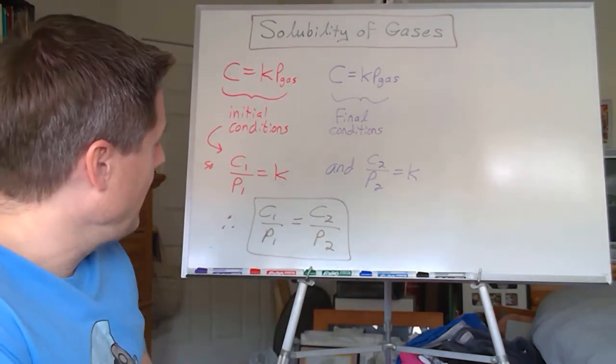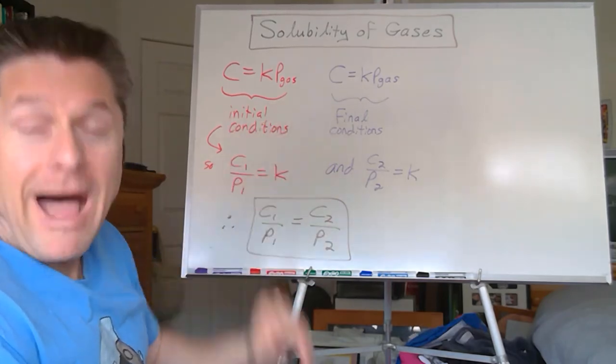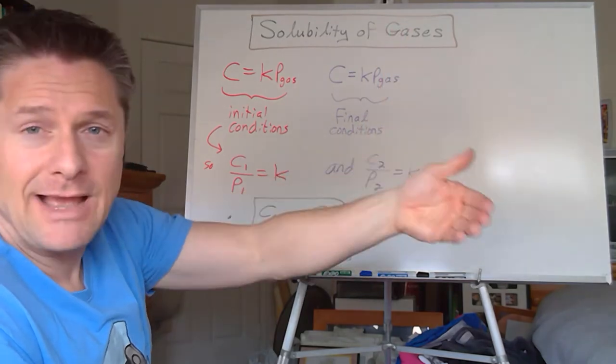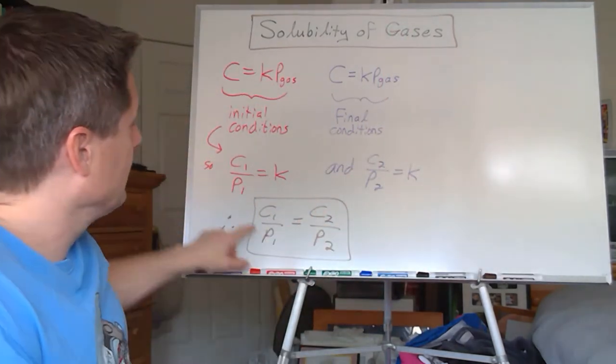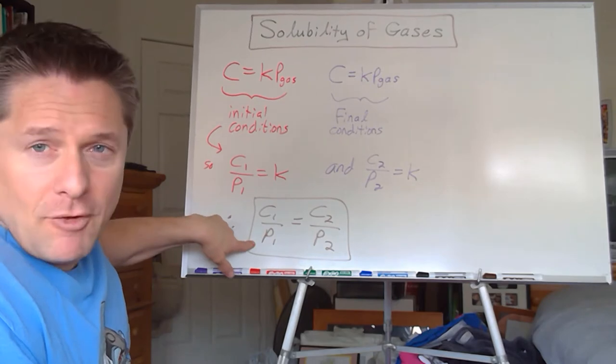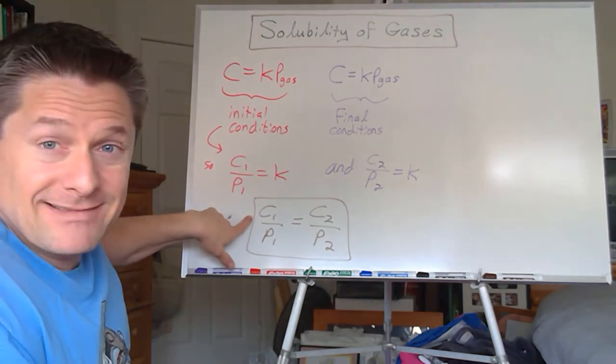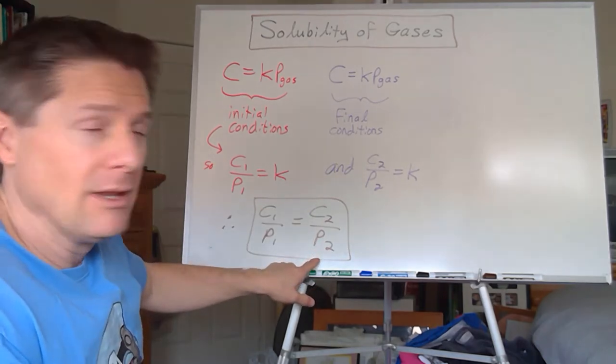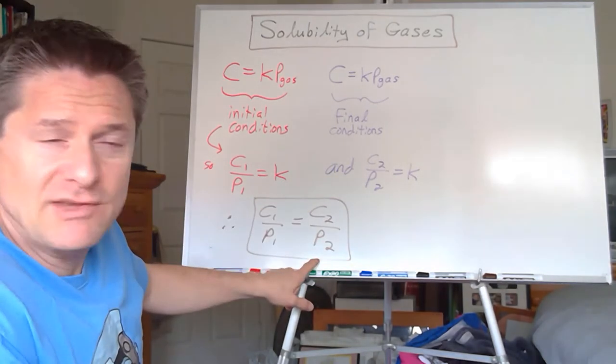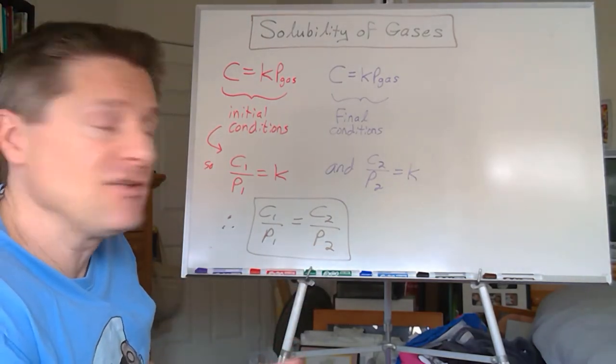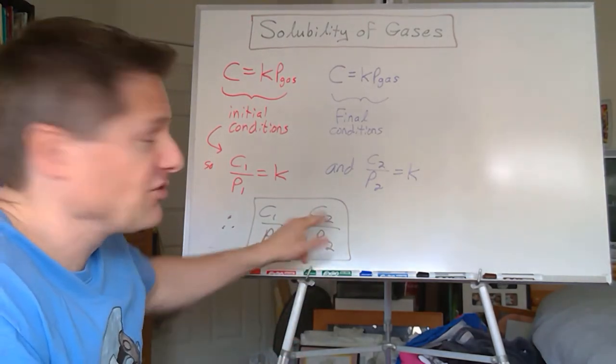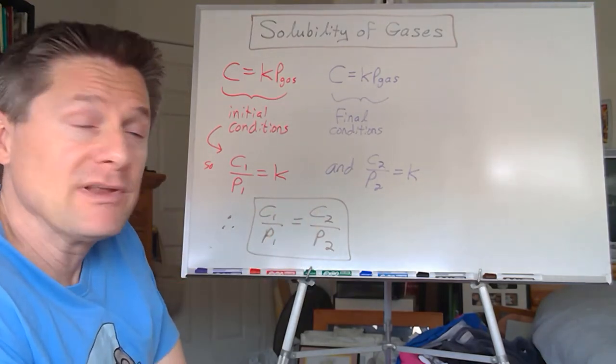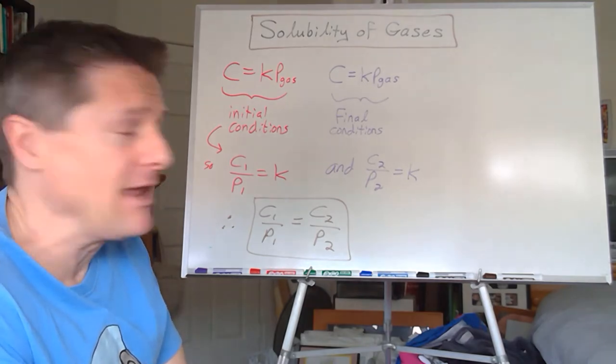So that's another way of looking at Henry's law, right? You can always derive it from the original Henry's law, where the concentration equals Henry's law constant times the pressure. But we can use this to say, well, let's say we're at sea level, and we know some concentration of a gas at sea level. What would be the concentration on top of a mountain or below the surface of, say you're a scuba diver or something like that? How would the pressure change? Or how would the concentration change if the pressure changes? So as long as you have three of these four variables, you can solve for the other one.